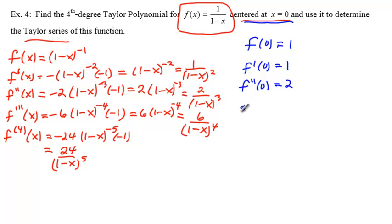Then we go on to f triple prime at 0, that gives us 6, and then the 4th derivative of f at 0, which as we see gives us 24.